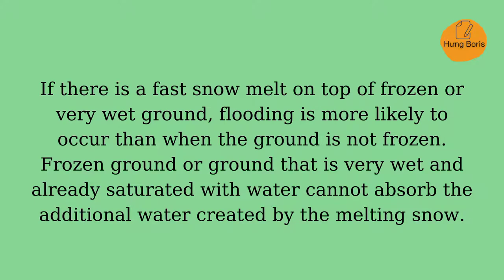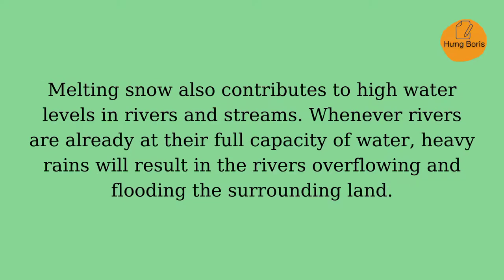If there is a fast snow melt on top of frozen or very wet ground, flooding is more likely to occur than when the ground is not frozen. Frozen ground, or ground that is very wet and already saturated with water, cannot absorb the additional water created by the melting snow. Melting snow also contributes to high water levels in rivers and streams. Whenever rivers are already at their full capacity of water, heavy rains will result in the rivers overflowing and flooding the surrounding land.